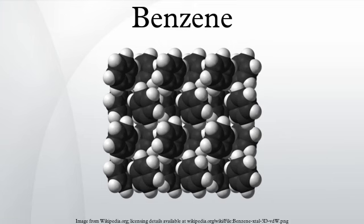Benzene is an aromatic hydrocarbon — a cyclic hydrocarbon with a continuous pi bond. It is sometimes abbreviated PhH. Benzene is a colorless and highly flammable liquid with a sweet smell. It is mainly used as a precursor to heavy chemicals, such as ethylbenzene and cumene, which are produced on a billion kilogram scale. Because it has a high octane number, it is an important component of gasoline, comprising a few percent of its mass. Most non-industrial applications have been limited by benzene's carcinogenicity.